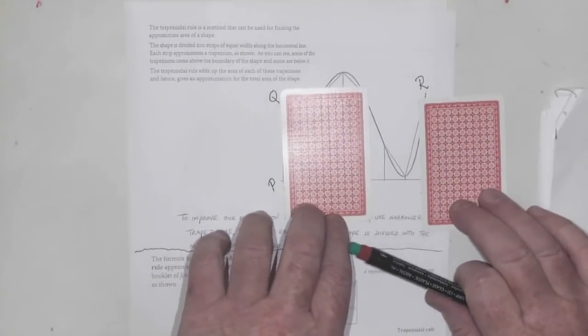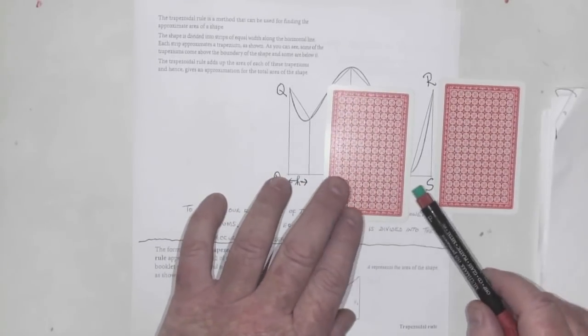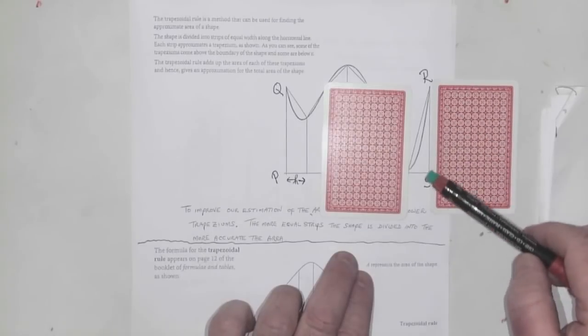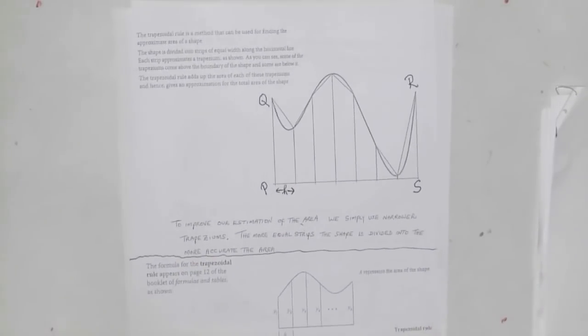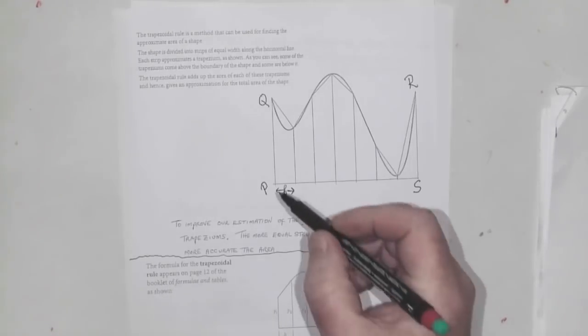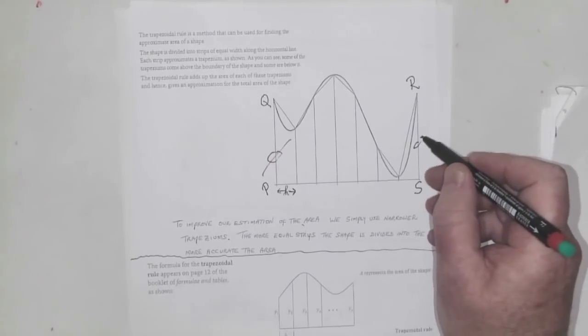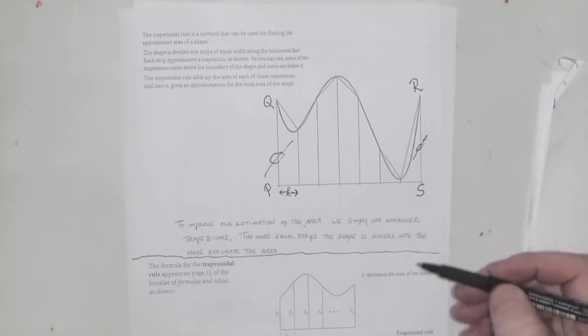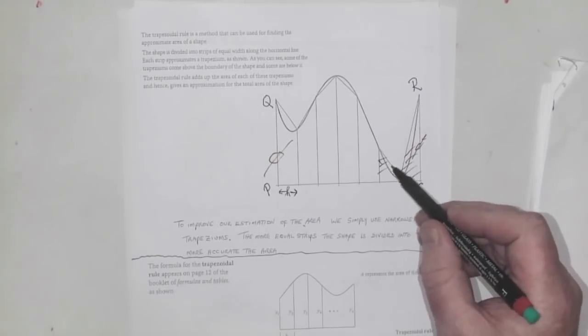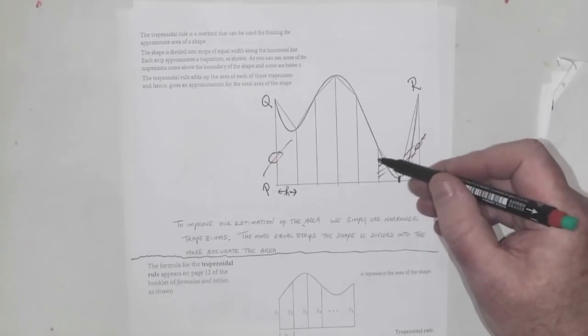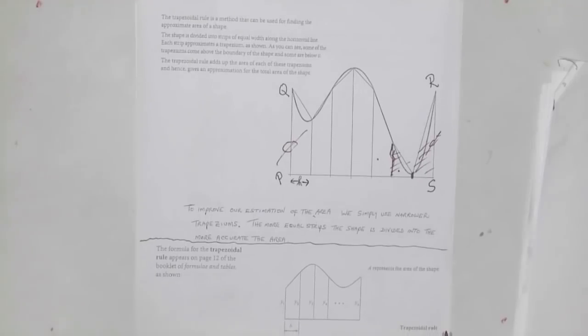The last one has width H and these two heights. This end side is only used once, but this little side here is used in this trapezium and in this one, so it's used twice. This is also used twice for the same reason.